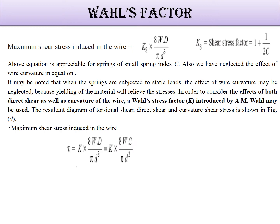In this factor, a simple thing is that instead of Ks, we have to use K. K is equal to 4C minus 1 divided by 4C minus 4, plus 0.615 by C. So instead of Ks, we have to use K for considering the curvature effect.